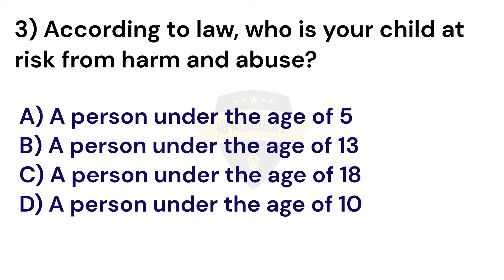Question 3: According to law, who is a child at risk from harm and abuse? Option A: A person under the age of 5. Option B: A person under the age of 13. Option C: A person under the age of 18. Option D: A person under the age of 10. The correct answer is Option C. According to the law, a child is a person under the age of 18.